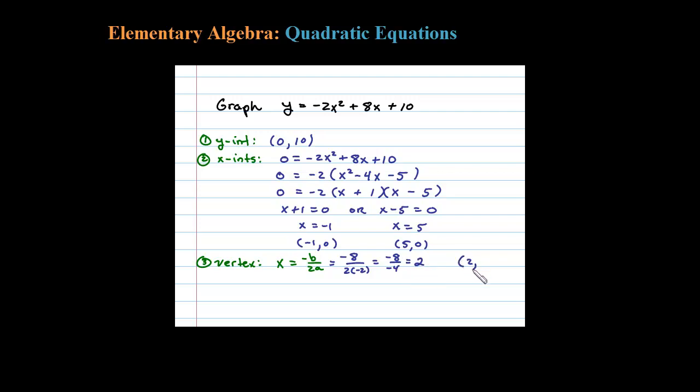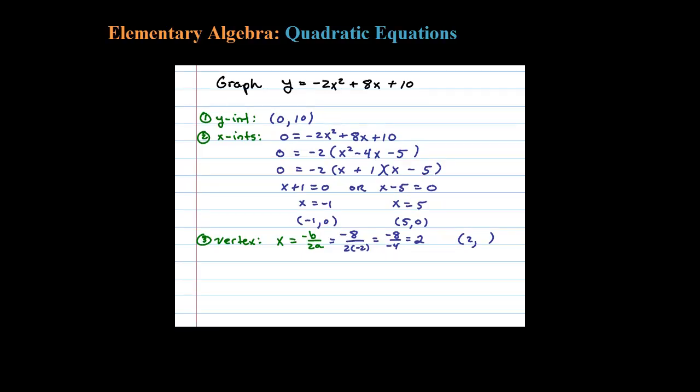2 comma... now to find the corresponding y value you have to substitute back into the original. So we're going to plug in 2 and see what we get. In this case 2² is 4, 4 times 2 is 8, and we have -2 there, so -8 + 16 + 10, well that's going to be equal to 18. So the vertex here is (2, 18).